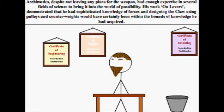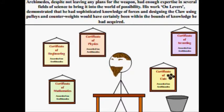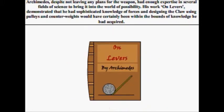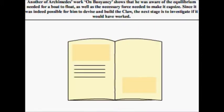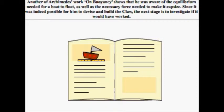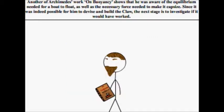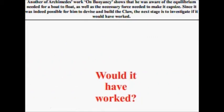Designing the claw using pulleys and counterweights would have certainly been within the bounds of knowledge he acquired. His work on buoyancy showed that he was aware of the equilibrium needed for a boat to float, as well as the necessary force needed to make it capsize. Since it was indeed possible for him to devise and build the claw, the next stage is to investigate if it would have worked.